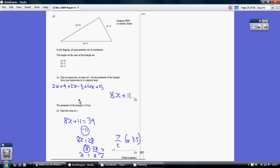Now they tell us that this perimeter, which we've just worked out to be 8x plus 11, happens to equal 39. So this equals 39. 8x plus 11 equals 39. So you've now created your own equation. It's now an equation because it equals something which you can solve.